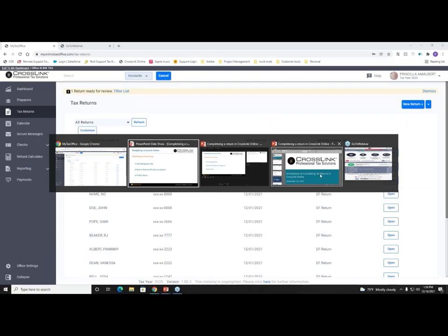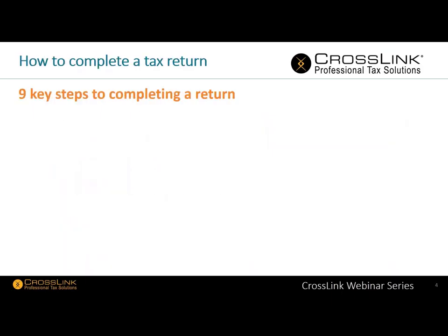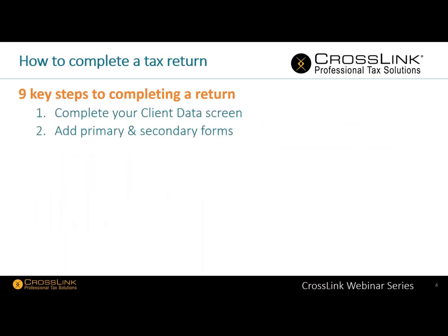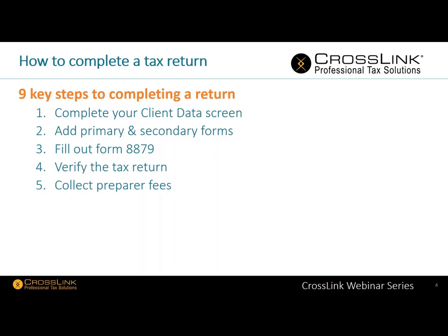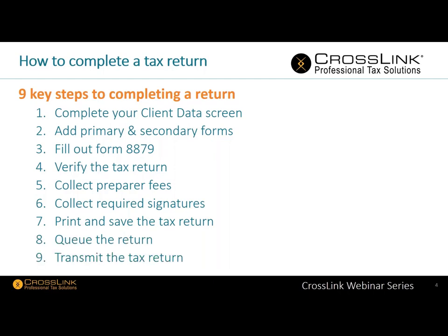Switching back to our PowerPoint — to recap the nine key steps: complete your client data screen, add primary and secondary forms plus any state forms, fill out your 8879 to determine how the taxpayer receives their refund, verify the tax return and clear all errors, collect your preparer fees for non-bank product returns, collect required signatures, print and save the tax return, and transmit the tax return. Note: step 8 referencing a queue does not apply to CrossLink Online — you simply transmit directly.